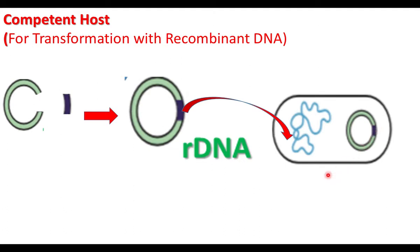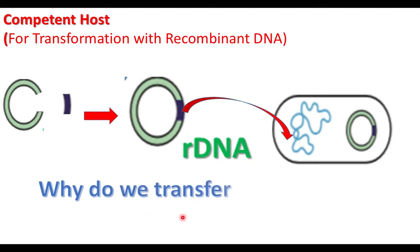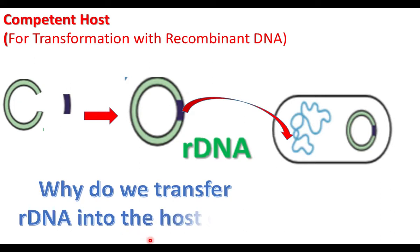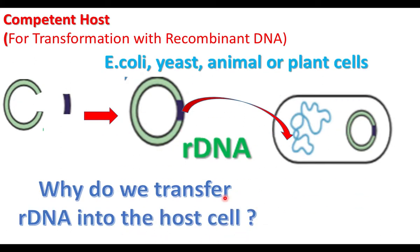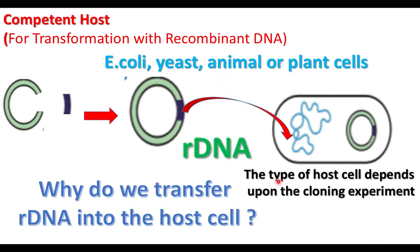So we have to transfer this rDNA into the host cell. When the rDNA is inside the host cell, it can replicate and the protein product of the foreign gene will be expressed. E. coli, yeast, animal, or plant cells are used as host cells.